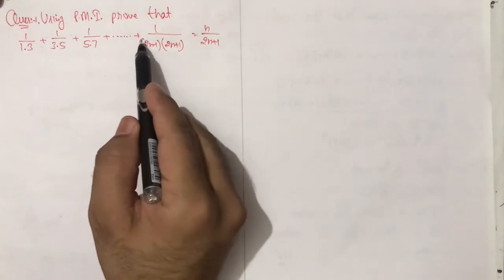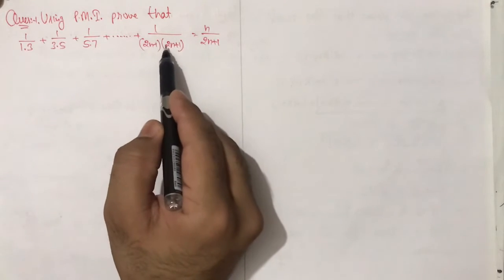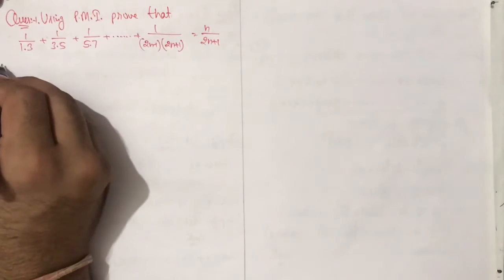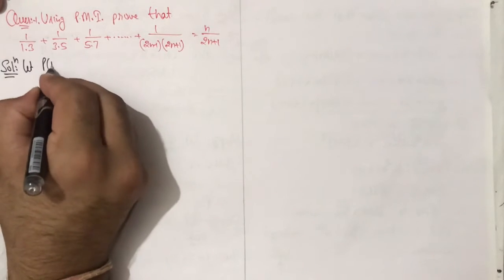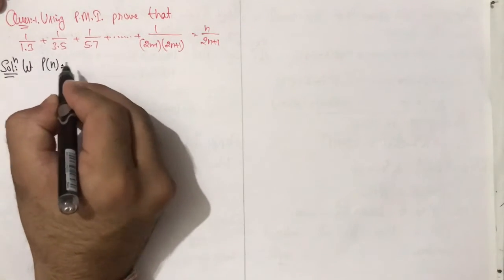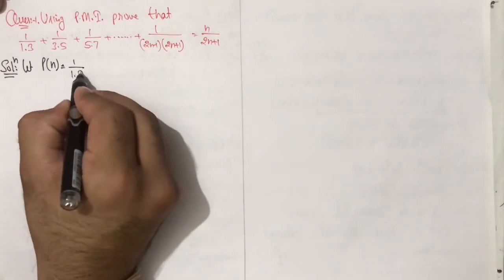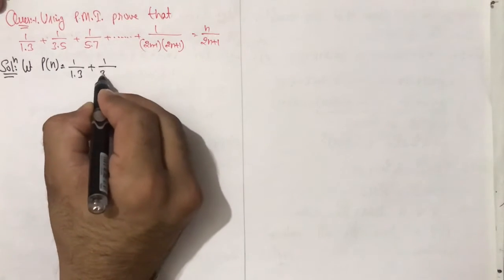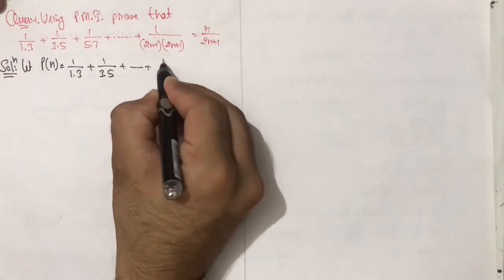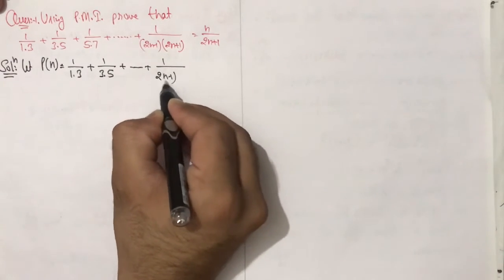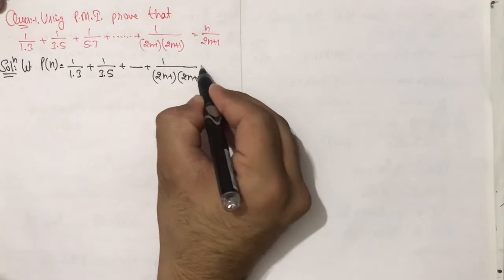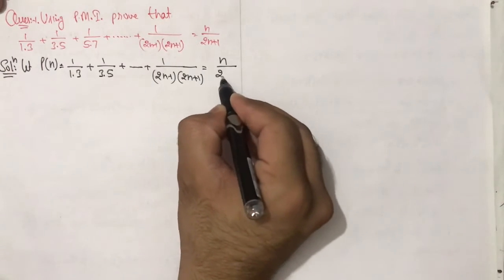Using PMI, prove that 1/(1×3) + 1/(3×5) + 1/(5×7) + ... + 1/((2n−1)(2n+1)) = n/(2n+1). Let P(n) denote the statement: 1/(1×3) + 1/(3×5) + ... + 1/((2n−1)(2n+1)) = n/(2n+1).